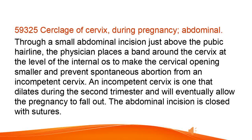Cerclage of cervix during pregnancy, abdominal. Through a small abdominal incision just above the pubic hairline, the physician places a band around the cervix at the level of the internal OS to make the cervical opening smaller and prevent spontaneous abortion from an incompetent cervix. An incompetent cervix is one that dilates during the second trimester and will eventually allow the pregnancy to fall out. The abdominal incision is closed with sutures.